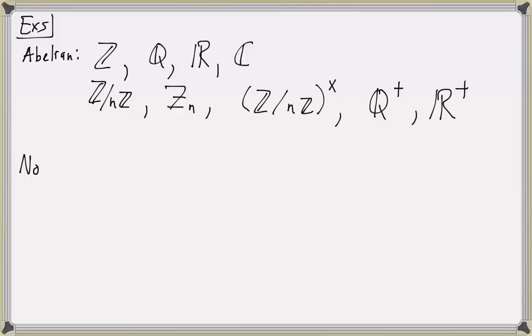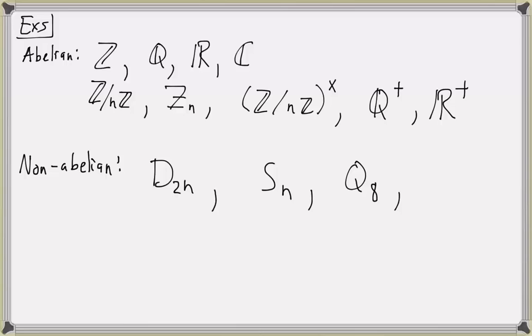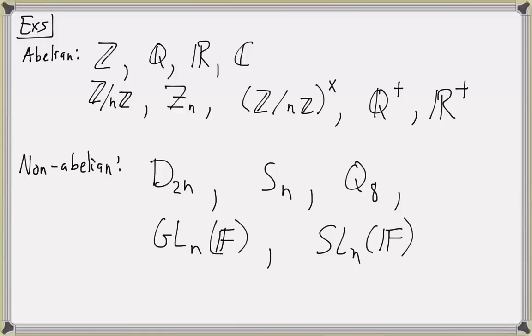Some common non-abelian groups: we have the dihedral group D2N, the dihedral group of order 2N, which consists of symmetries of an N-gon. The symmetric group of degree N, S_N, consists of permutations of the numbers 1 through N. The quaternions Q8 form a non-abelian group. We also have the general linear group on a field F, consisting of invertible N by N matrices with entries in F, and the special linear group, consisting of N by N matrices with determinant equal to 1 with entries in the field F.